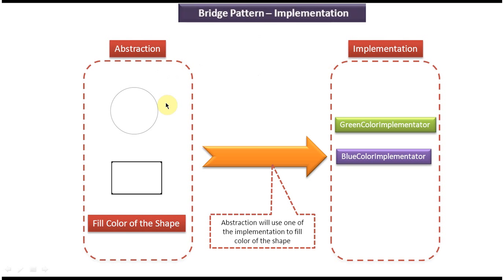On the left side you can see the abstraction layer with different shapes — circle and rectangle. Suppose I want to fill the color of a shape with green or blue. I can use one of the implementers on the right side: the green color implementer or the blue color implementer. At a later point, if I want to add a new implementer like a red color implementer, I can add it in the implementation layer without affecting the abstraction layer.